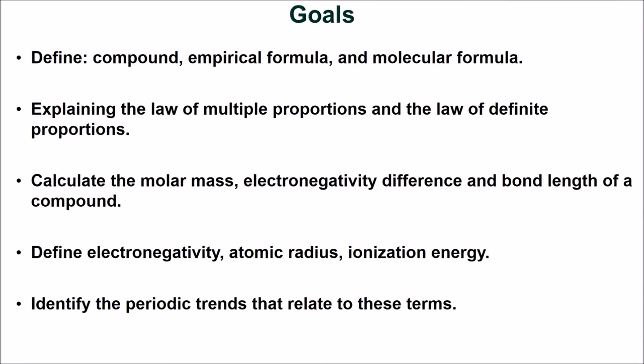We have now covered the beginning concepts of how atoms combine to form compounds. You should be able to define compound, empirical formula, and molecular formula, and be comfortable explaining the law of multiple proportions and the law of definite proportions. You should be able to calculate the molar mass, electronegativity difference, and bond length of a compound, and define electronegativity, atomic radius, and ionization energy, and identify the periodic trends that relate to these terms. This section contains detailed example problems with solutions that you should be sure to work through before moving on to the next section.